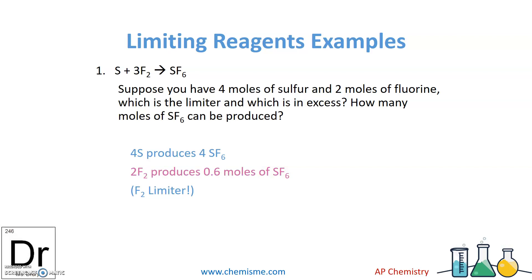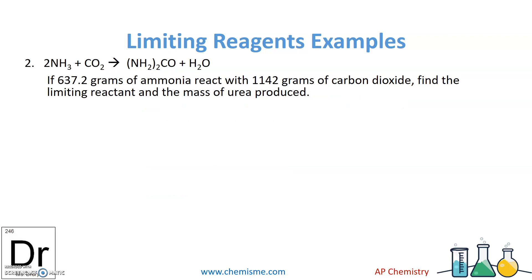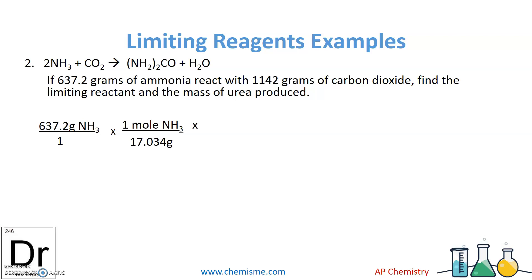You show both calculations to prove which one is excessive and which one is the limiting reactant. Let's try something trickier using dimensional analysis. Two ammonias react with one carbon dioxide to form urea and water. If 637.2 grams of ammonia react with 1142 grams of carbon dioxide, find the limiting reactant and how much urea can be made. Let's look at just ammonia first. I take 637.2 grams of ammonia and divide by its molar mass.